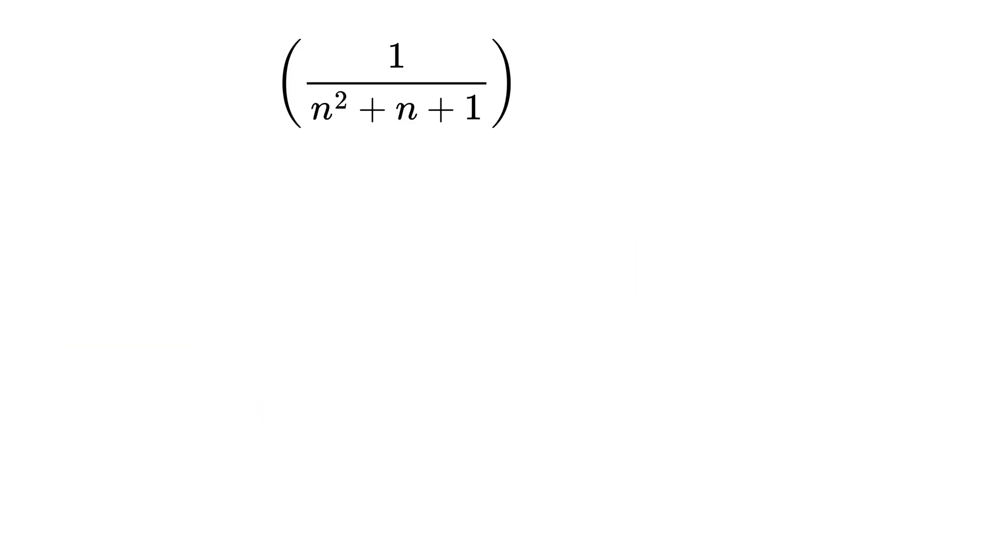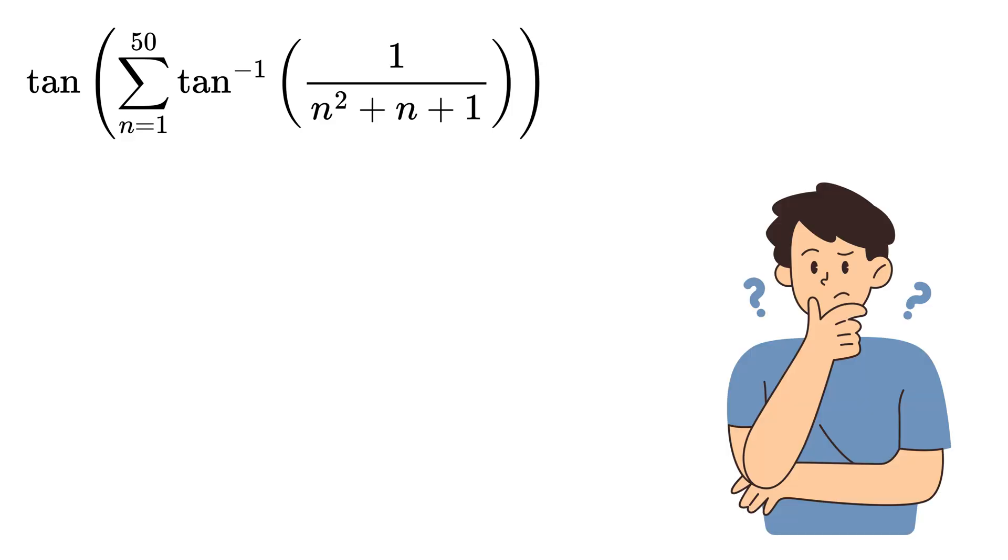First, we have this fraction, then we take the tangent inverse of this fraction, then we sum all these tangent inverse values from n equals 1 to n equals 50. Finally, we take the tangent of this entire sum, so the question is asking us to find the value of this entire thing.